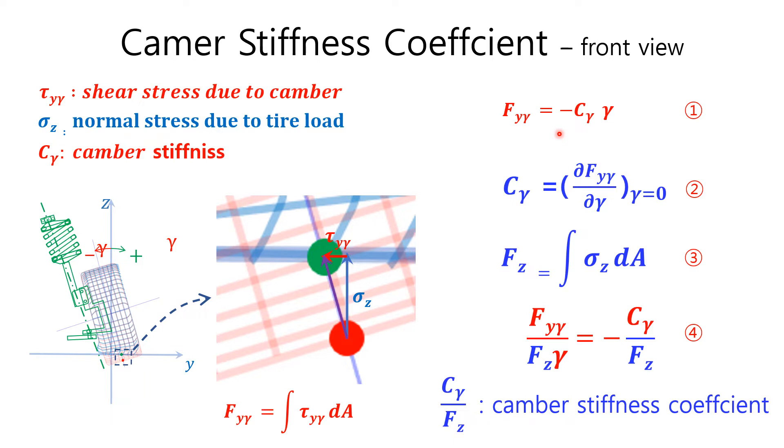Camber stiffness coefficient is simply camber stiffness divided by tire-road force Fc, and its unit is per radian. Generally speaking, camber stiffness for radial passenger car tire is about 40% to 50% lesser than that of bias-ply tire. I will explain this value later in this video.